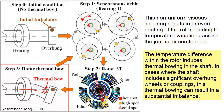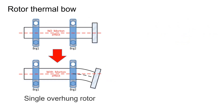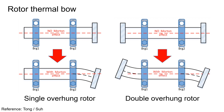The temperature difference within the rotor induces thermal bowing in the shaft. In cases where the shaft includes significant overhung reel or coupling, this thermal bowing can result in substantial imbalance. This illustrates thermal bowing which can lead to substantial deflection at the overhung location.